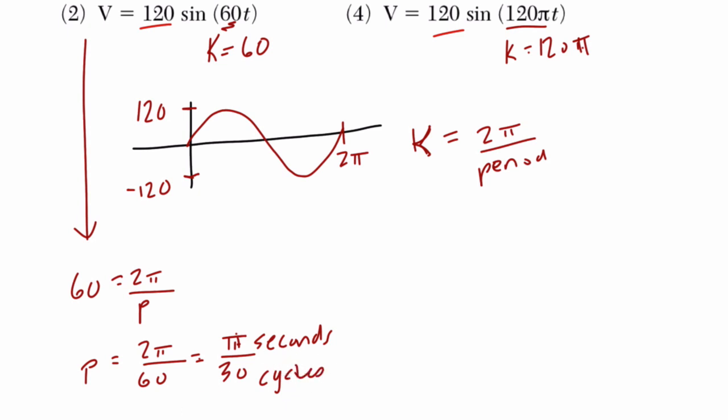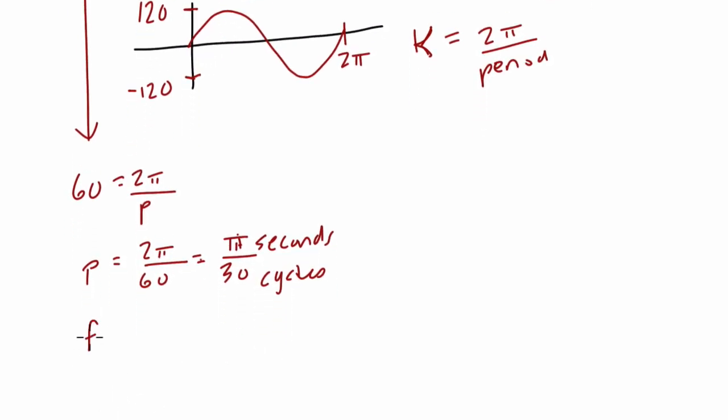And the frequency is the reciprocal of the period. I'll call it f, it's 30 cycles every π seconds. But that's not what we want. We want to look at 60 cycles every one second.